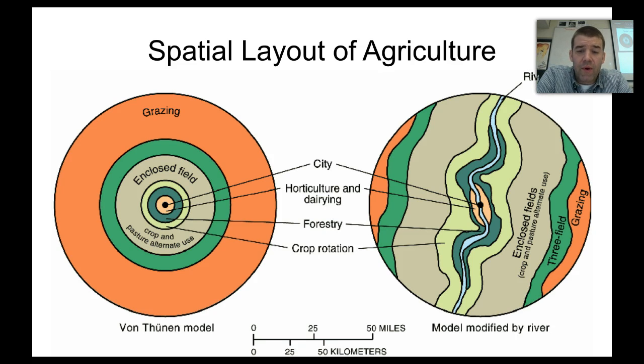And on the right you see what happens when we actually apply some of those changes with the physical feature like a river. Starting with the von Thünen model on the left, we see the city in the middle and the closest ring is horticulture and dairy.